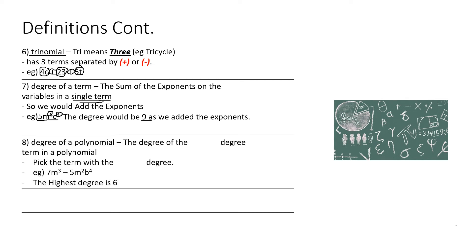Number 8, Degree of a polynomial: the degree of the highest degree term in a polynomial — pick the term with the highest degree. Example: 7m cubed minus 5m squared b to the power of 4. These are two different terms. For the second term, we add exponents 2 and 4 to get 6. The first term has degree 3. So the highest degree is 6.